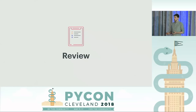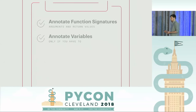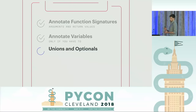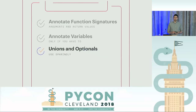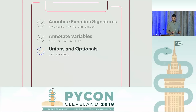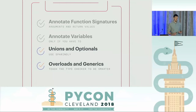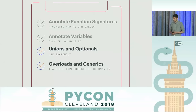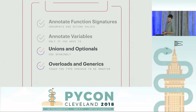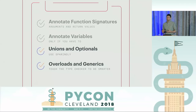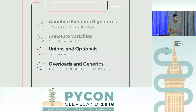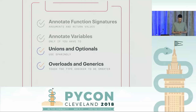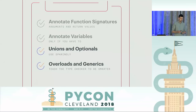To review: we can use unions and optionals, but sparingly. Overloads and generics allow us to teach the type checker more about the invariance of our type signatures, making functions much more usable for callers without needing redundant checks.